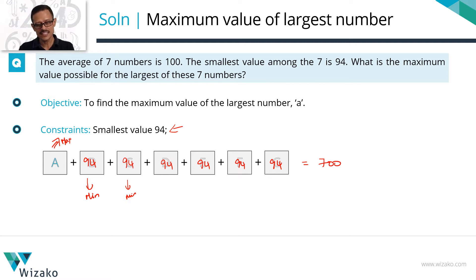So A plus 6 of these numbers taking a value of 94 should add up to a 700. So A plus the maximum value of A plus the minimum value is going to happen when these values are all minimized, which is 6 times 94. 6 times 90 is a 540 plus 94 which is equal to 564 equals 700. So A max is equal to 700 minus 564 which is equal to 136.